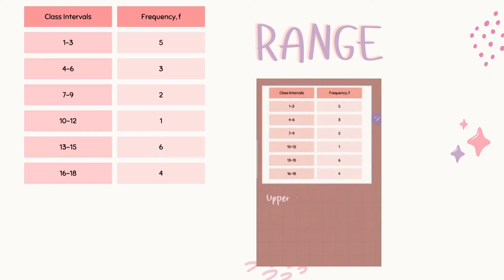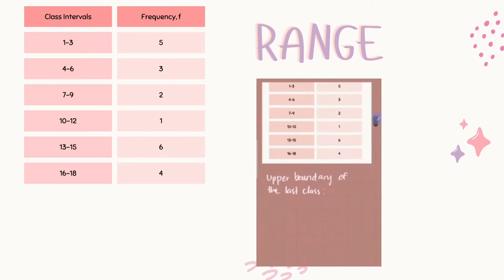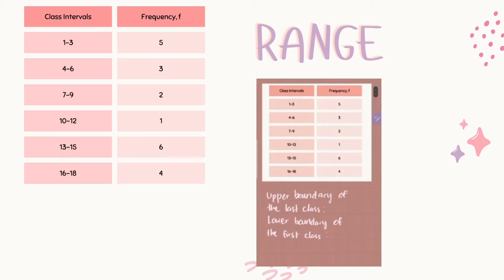To find range, we need to find the upper boundary of the last class and the lower boundary of the first class. From the data, the last class is 18, so our upper boundary will be 18.5 and our lower boundary is 0.5.